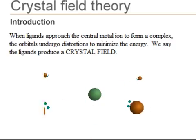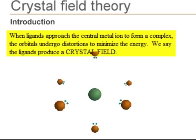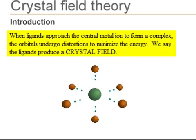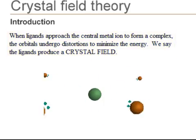The idea of crystal field theory is that the ligands approach the central atom and create a local crystal-type field, and this affects the d-orbitals of the central atom.